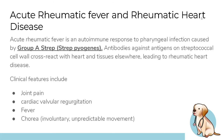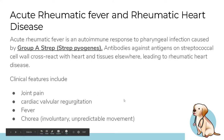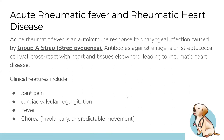Acute rheumatic fever occurs after infection with Group A Streptococcus (Strep pyogenes), which typically causes a sore throat. The body produces antibodies against the bacterium, but these antibodies cross-react with heart tissue and sometimes joint tissue, because the antigens are structurally similar. This leads to rheumatic heart disease. Clinical features include joint pain, cardiac valve regurgitation, fever, and chorea — involuntary unpredictable movements. Remember: Group A Strep / Strep pyogenes is the key organism.